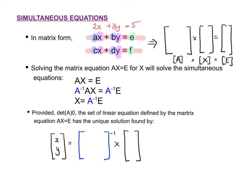When you set up the matrices for simultaneous equations, the first matrix will be a 2 by 2, and in it go the numbers in front of X and Y. So A goes there, B goes there, C goes there, and D goes there — going down, the first column is the number in front of X and the second is the number in front of Y. Then you multiply by a 2 by 1 matrix containing the unknowns X and Y, and set it equal to a 2 by 1 matrix with the equation answers E and F.